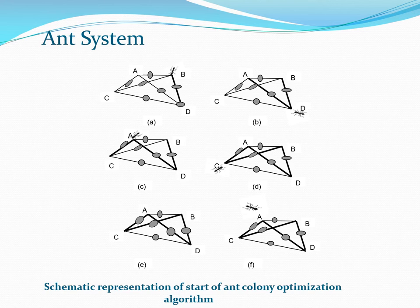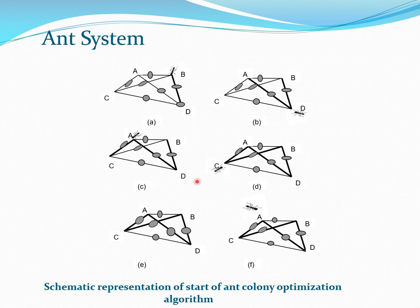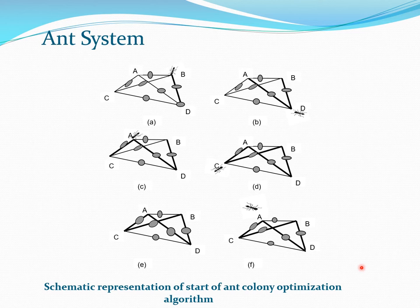The ant system is simpler and more quantifiable than the ACO metaheuristic — in fact it is one of the ACO metaheuristics. We are going to demonstrate how the ant moves around in a simple problem involving four cities A, B, C, and D. The ant starts from city B, moves to D, then to A, then to C, and back to B. A new ant then starts from A.